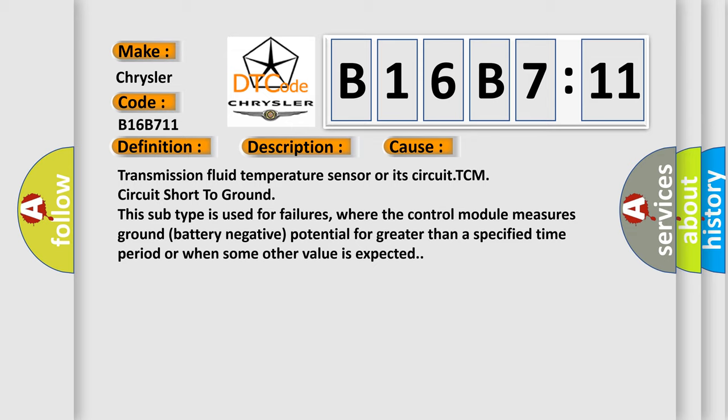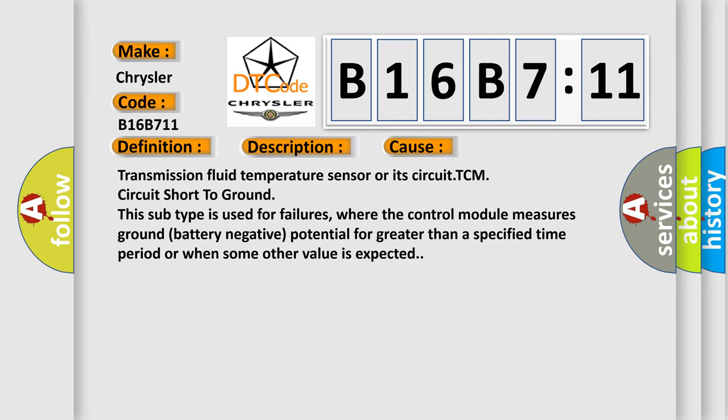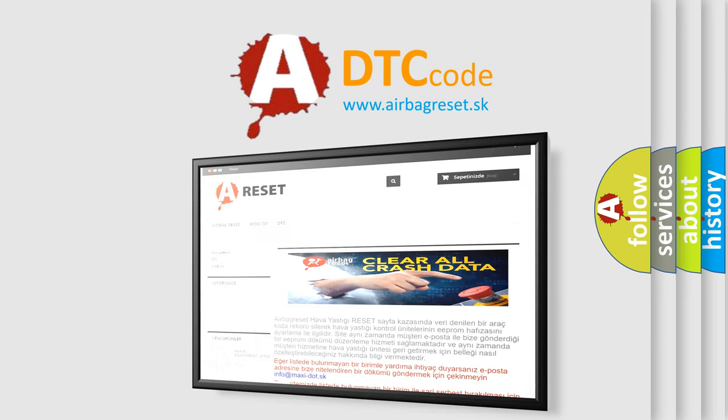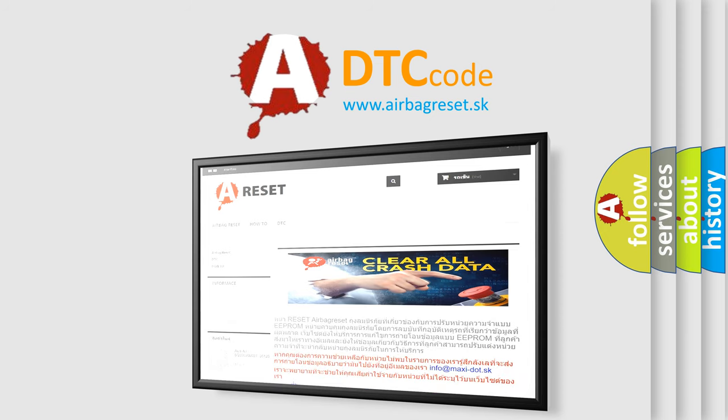This subtype is used for failures where the control module measures ground battery negative potential for greater than a specified time period or when some other value is expected. The Airbag Reset website aims to provide information in 52 languages. Thank you for your attention and stay tuned for the next video.